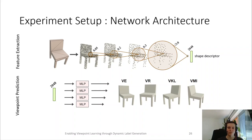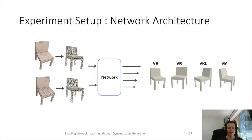Note that we train the feature extractor shared for all four view quality metrics for better performance. Further, we train all the networks category-specific, which means we train eight different networks for our eight object categories. Here you can see the example for the chair category. The use of point clouds as input makes our method robust to the input mesh discretization, as differently meshed instances of the same geometric object will result in similar point clouds.